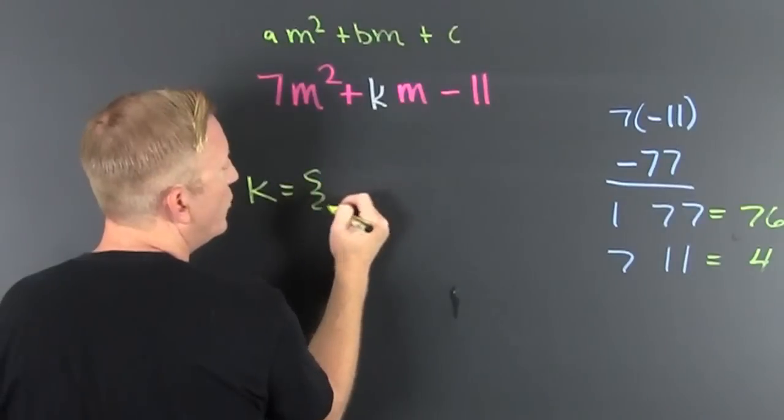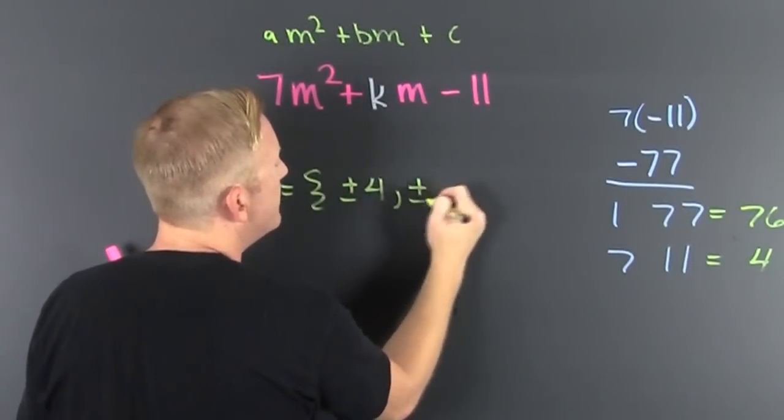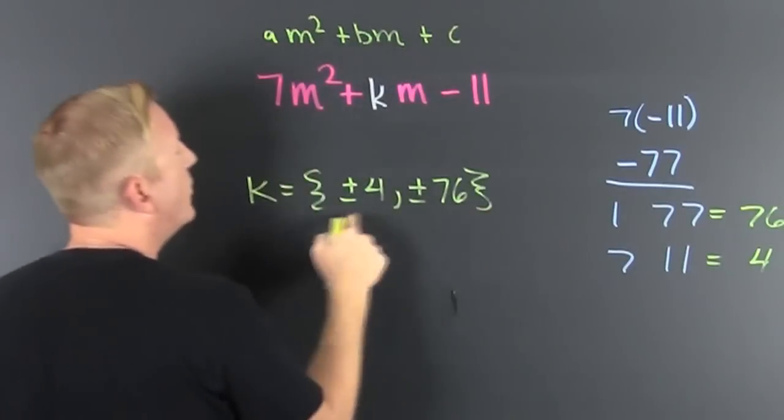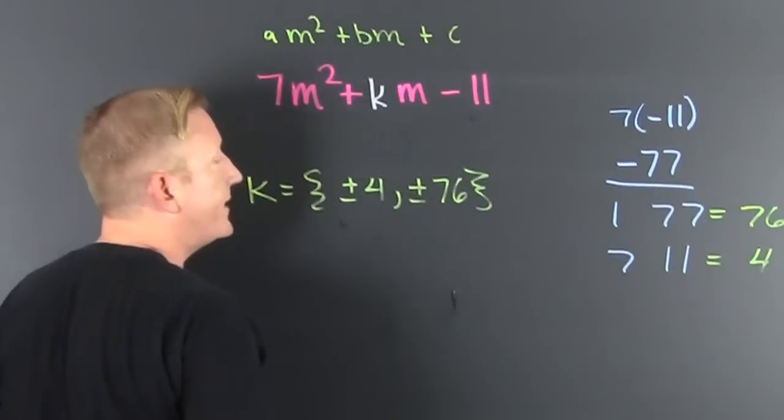So I'm going to say that my k is going to be plus or minus 4 or plus or minus 76. Those are the only ones that are going to make that quadratic factor.